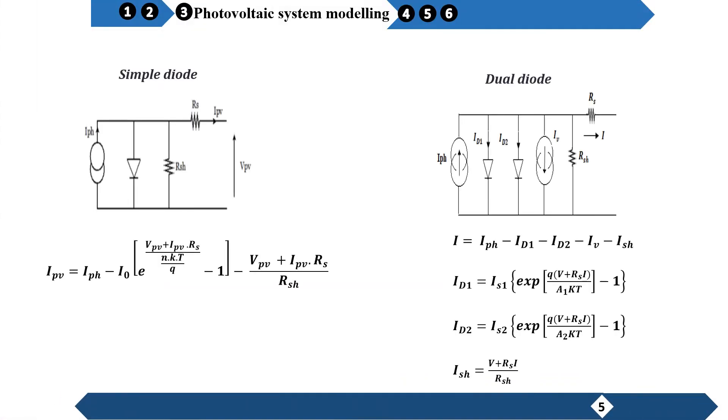The PV cell can be modeled either by using a simple diode. The relation between the current and the voltage is the following equation, or a dual diode for better accuracy, efficiency, and prediction. We apply Kirchhoff's law to obtain the relation between the current and the voltage of the system.